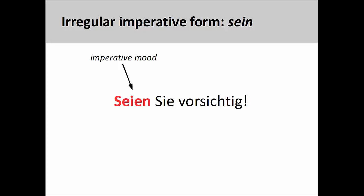The only exception to this rule is the verb 'sein' — to be — which has irregular imperative forms. The formal imperative form, as you see here, is 'seien', as in 'Seien Sie vorsichtig' — be careful.